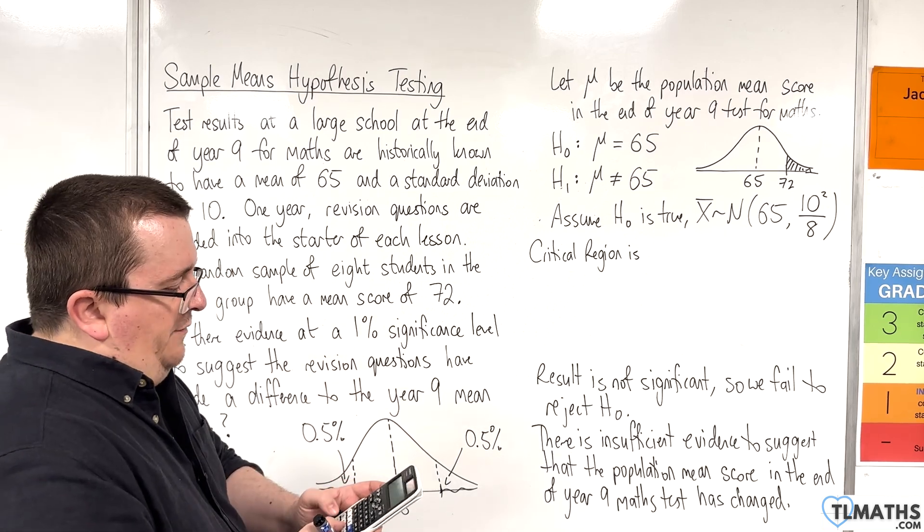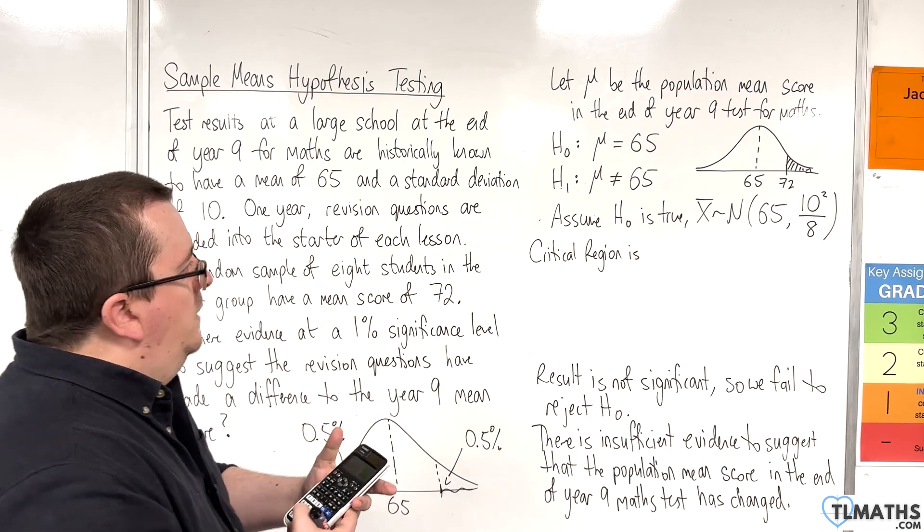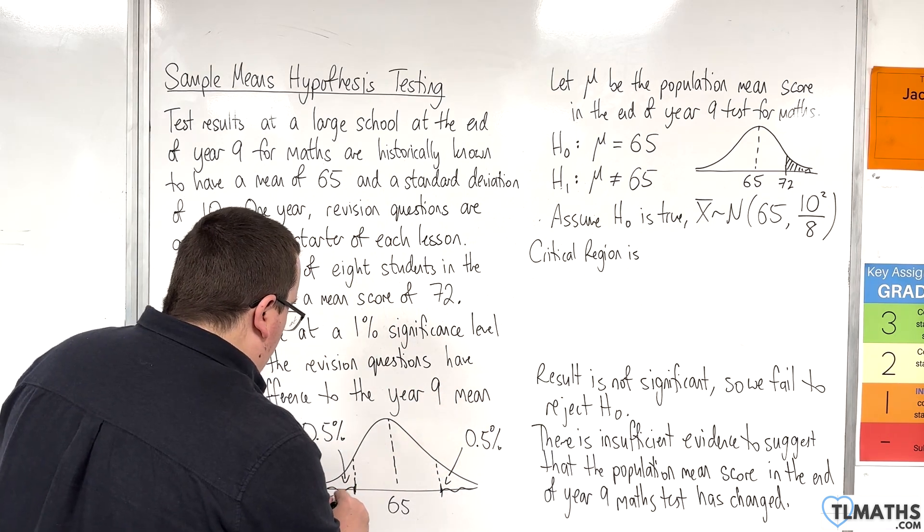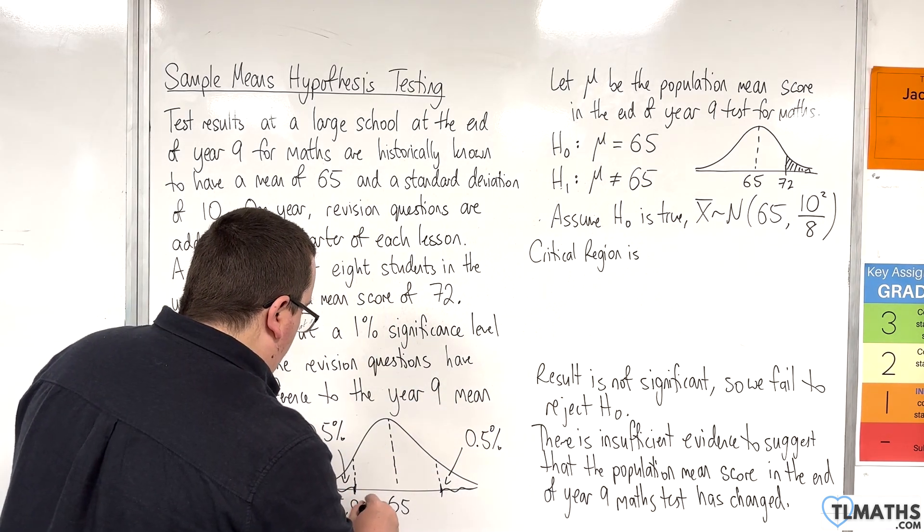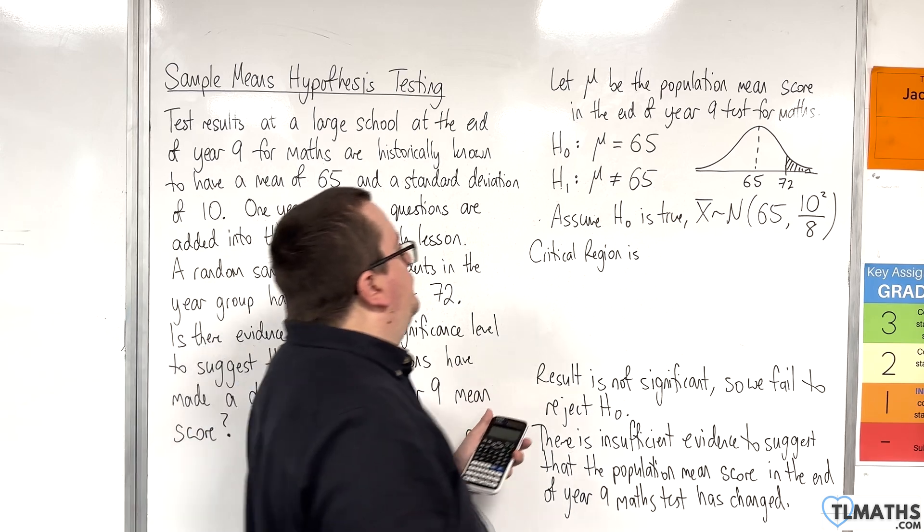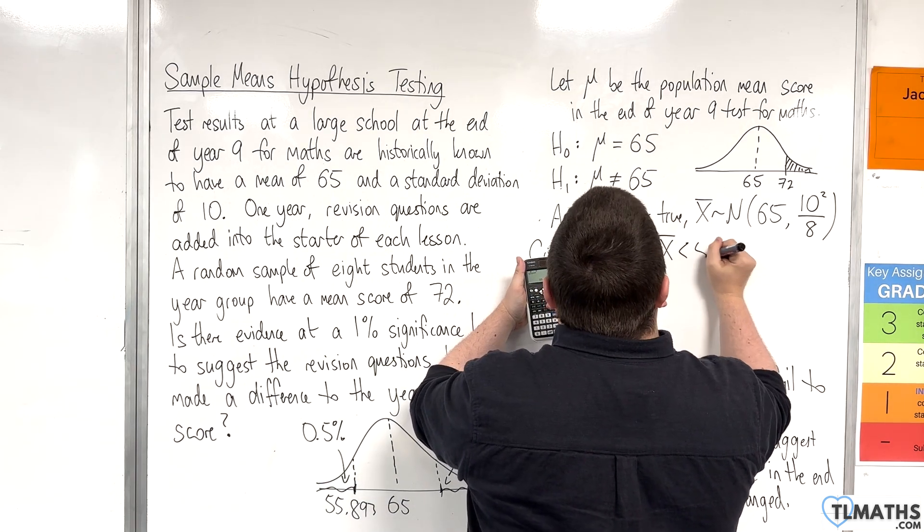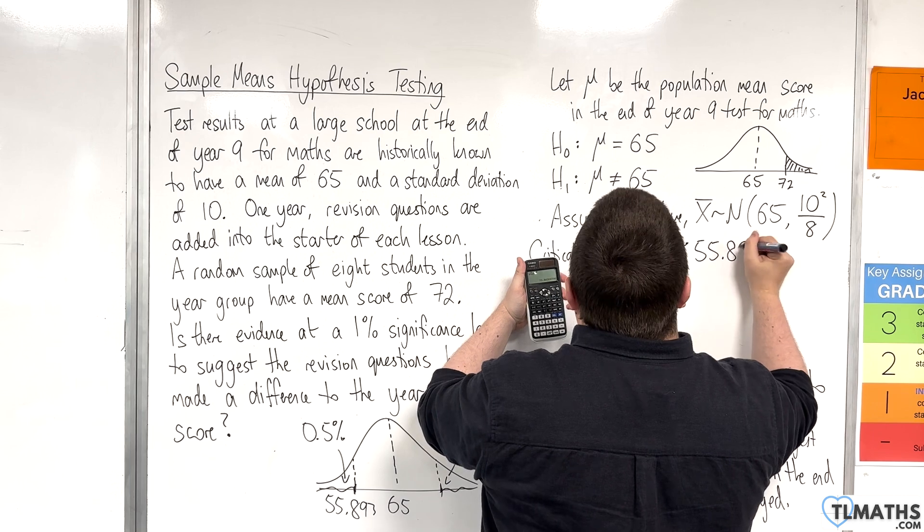And the mean is 65. So, we're getting 55.893. So, x-bar is less than 55.893.